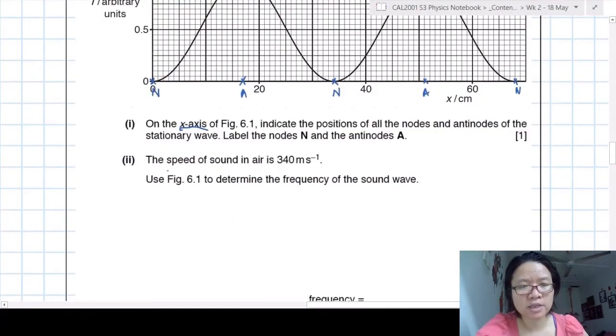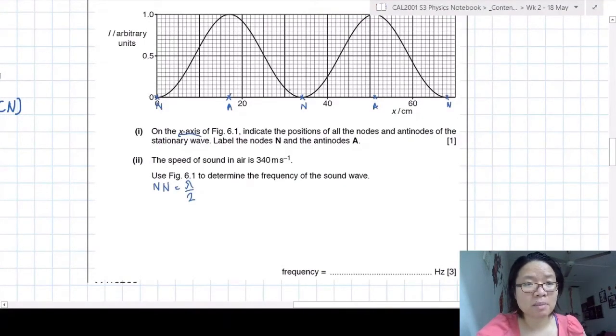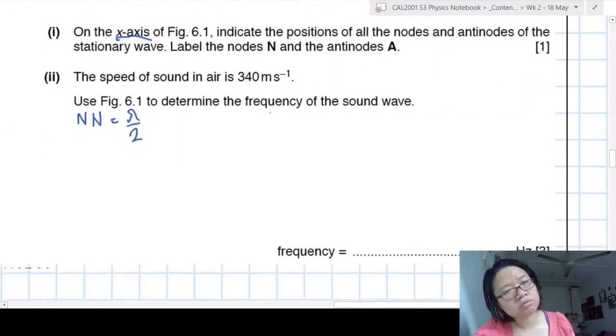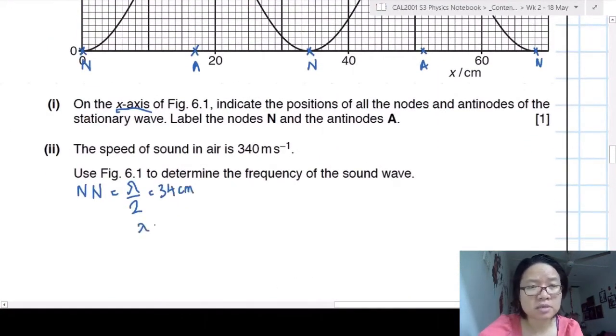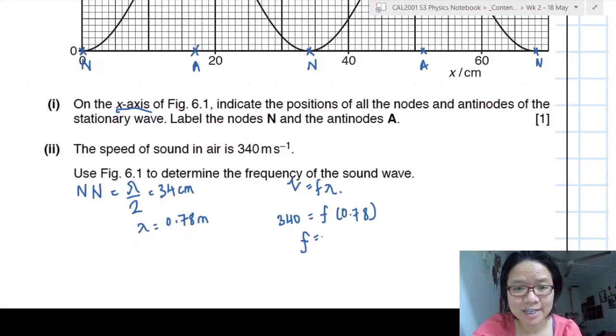Speed of sound is 340. Determine the frequency. So we are going to use v equal to f lambda, but step 1 is to find lambda. So lambda will be n to n. n to n is lambda over 2. Then this one looks like 34. So lambda over 2 is 34 centimeters, which is 0.78 meters. And we can just plug into the equation v equal to f lambda. And we can find our frequency. This is a pretty straightforward question once you know how to interpret the intensity position graph.